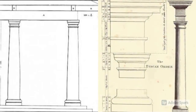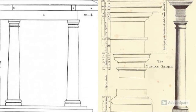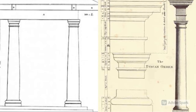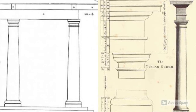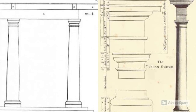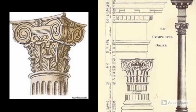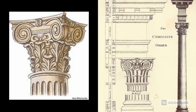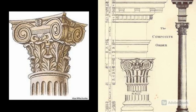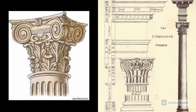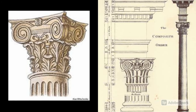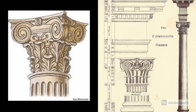The Tuscan order is a Roman adaptation of the Doric. The Tuscan has an unfluted shaft and a simple abacus capital. The Composite order, which was not ranked as a separate order until the Renaissance, is the late Roman development of the Corinthian. It's called the Composite because its capital is composed of Ionic volutes, or scrolls, and Corinthian acanthus leaf decorations.